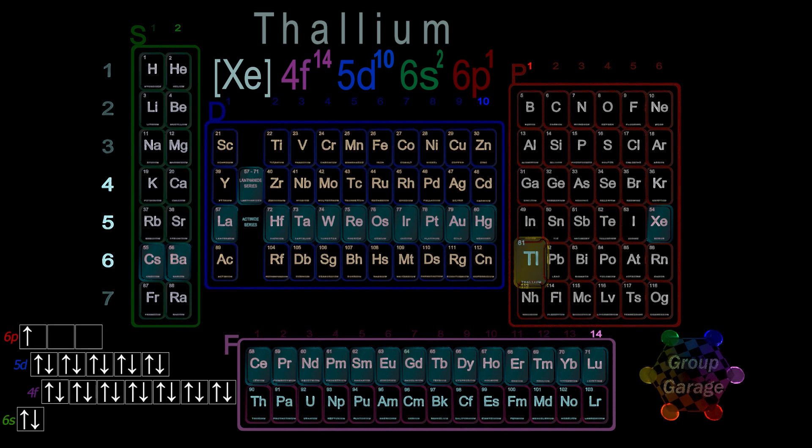Also provided in the lower left are the electron spin orientations for thallium — the orbital diagrams for the s, d, p, and f subshells.